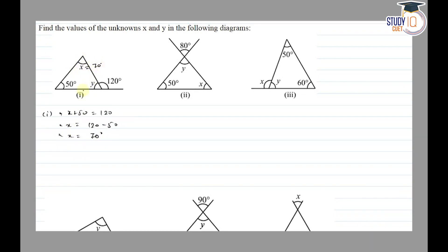And the sum of all interior angles is 180 degrees. So 50 plus 70 plus y is equal to 180. Therefore y is equal to 180 minus 120, so y is equal to 60 degrees.